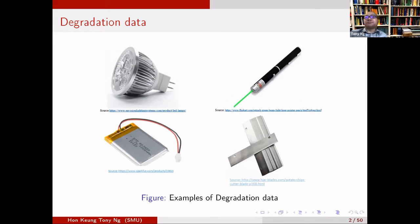What people do in reliability is measure some characteristic related to the failure time. For LED lighting, we measure the light intensity, which drops as you use the item. For batteries, they measure the charge and recharge capacity, which keeps dropping. If we can get measurements for the degradation characteristic, we can build a statistical model and predict the lifetime of that item.